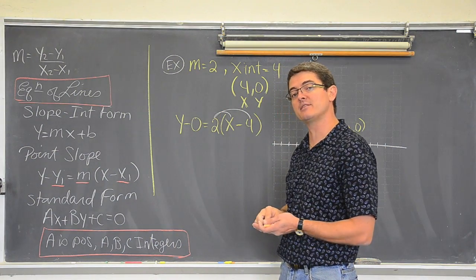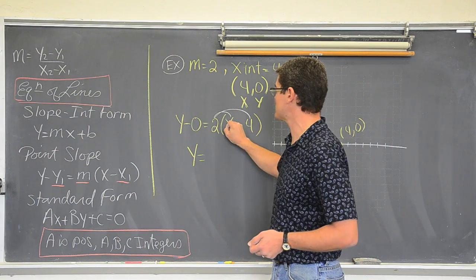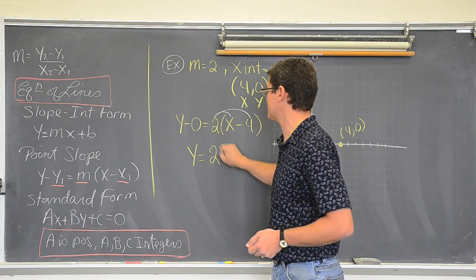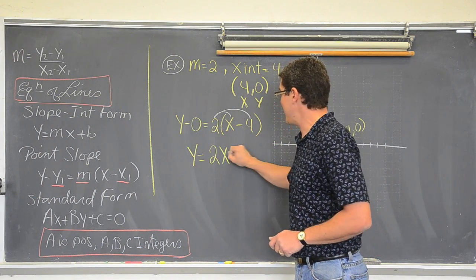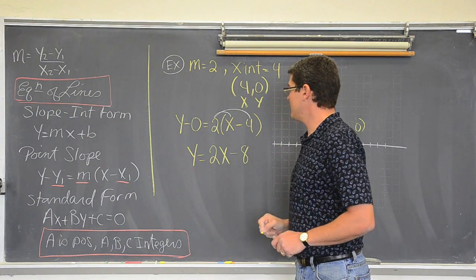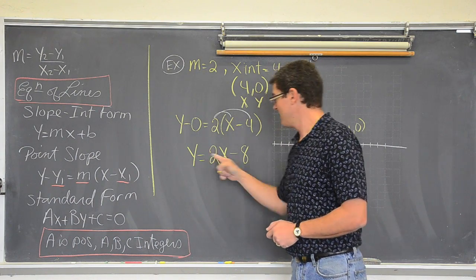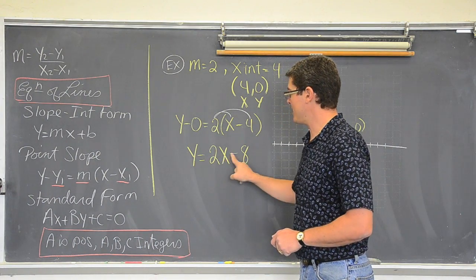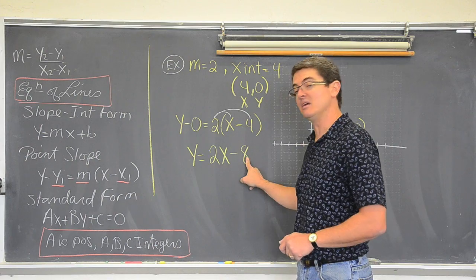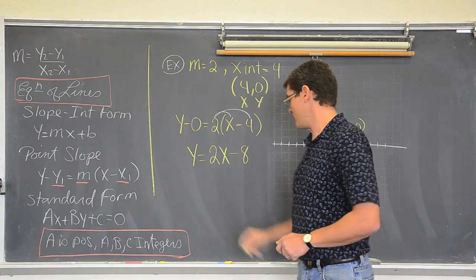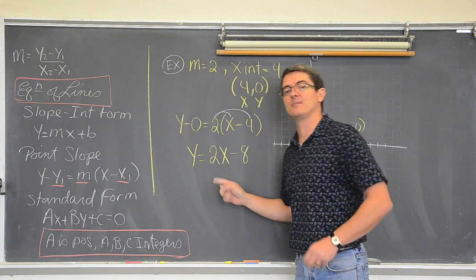Subtracting 0 doesn't do anything so I am not going to show that anymore. y equals 2 times x is 2x; 2 times negative 4 is negative 8. And I got my slope-intercept form: y equals mx plus b.